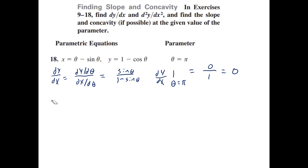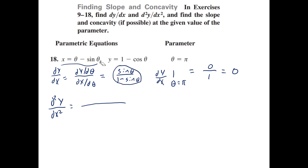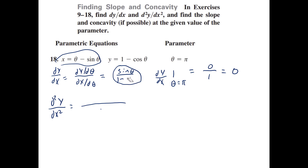For the second derivative, we follow the formula for parametric equations: take the derivative of y prime and divide it by the derivative of x. The derivative of x is 1 minus cos(θ). I made a mistake earlier — the derivative of (θ minus sin θ) is 1 minus cos(θ), so that's what should be in the denominator.